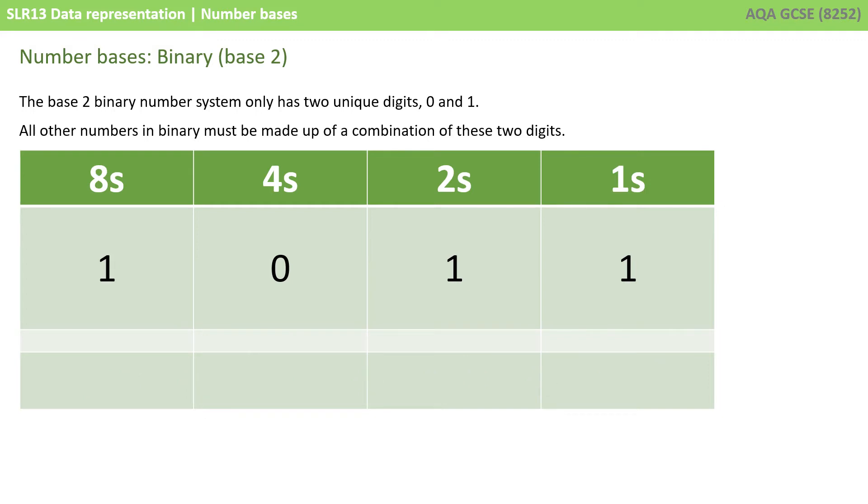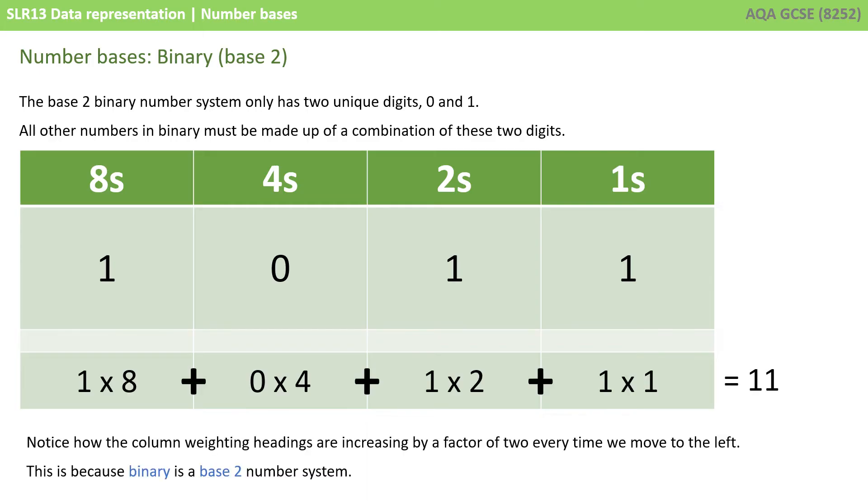Let's do exactly the same thing, but this time for a slightly larger number. The process is identical. Starting on the left here, I have a 1 in the 8 column. So, I've got 1 lot of 8. I'm adding that to 0 lots of 4. I'm adding that to 1 lot of 2. And finally, 1 lot of 1. So, I have an 8 plus a 2 plus a 1. So, this number is 11 in decimal.